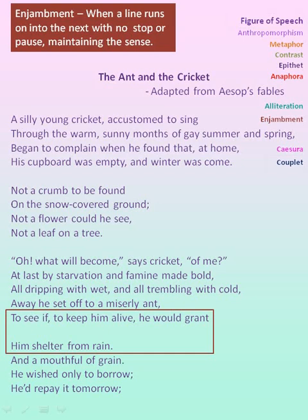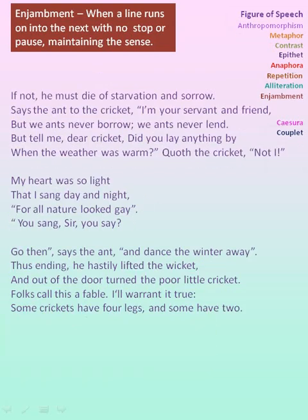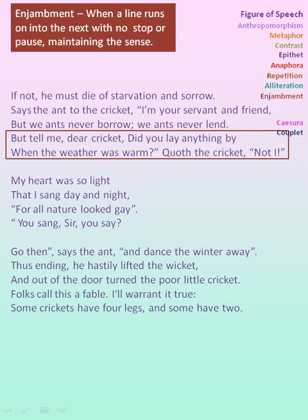'Not a crumb to be found on the snow-covered ground' — no punctuation at the end of the first line, hence enjambment. Here enjambment is from the third stanza's last line to the fourth stanza's first line: 'to see if, to keep him alive, he could grant him shelter' — there is no punctuation at the end of the last line in the third stanza, hence enjambment.